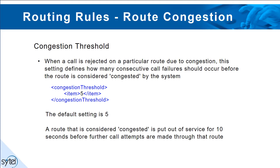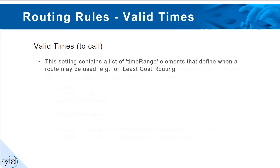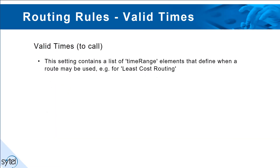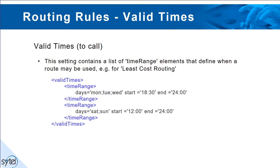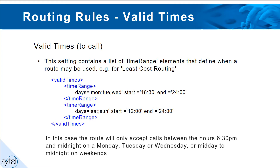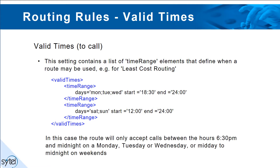Valid times: this setting contains a list of time range elements that define when a route may be used, for example for least cost routing. In this case the route will only accept calls between the hours of 6:30pm and midnight on a Monday, Tuesday, or Wednesday, or midday to midnight on weekends.